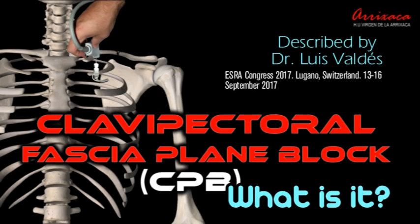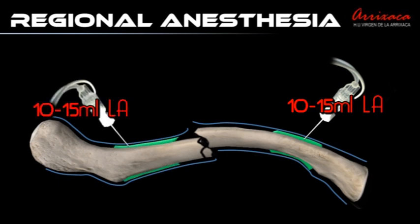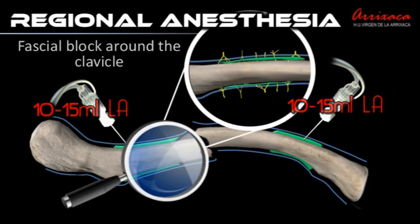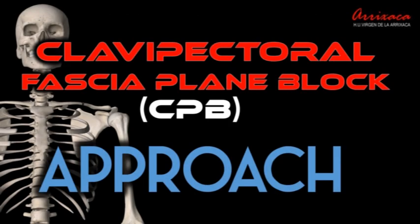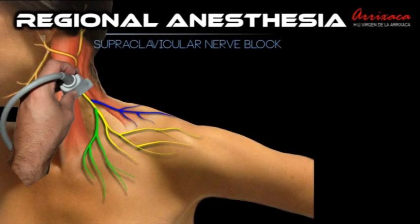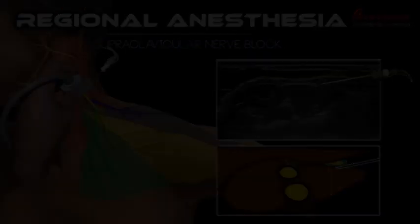The clavipectoral fascia block was first described in 2017. This block consists of injecting 10–15 ml of long-acting local anesthetic deep to the fascia on both the medial and lateral side of the clavicle fracture. This technique must be complemented by the block of the supraclavicular branch of the superficial cervical plexus to provide anesthesia on the skin above the clavicle.